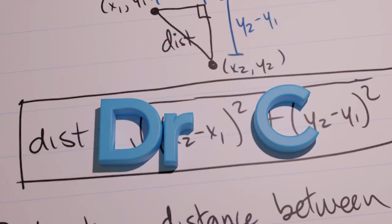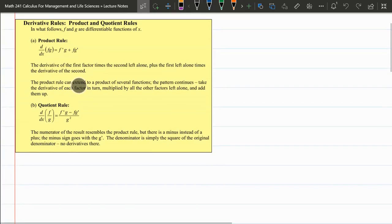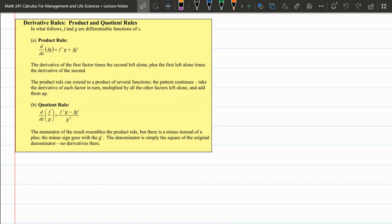We're gonna look at the product and quotient rules now. And here they're written out. We can write them a little smaller. So for the product rule, f times g, I like to explicitly draw the multiplication dot in there. Derivative equals f prime times g plus f times g prime.